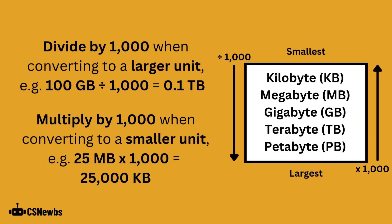You must divide by 1000 when converting to a larger data unit. For example, 100GB divided by 1000 would give you the equivalent in terabytes, which is 0.1.